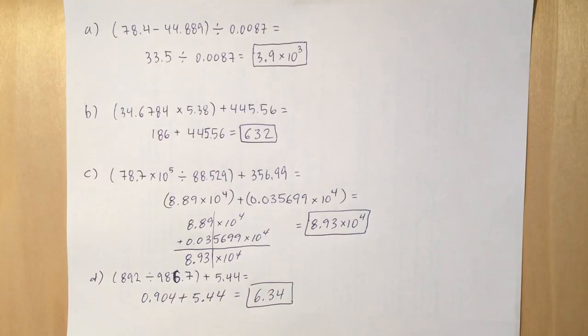And then lastly, same strategy. You do what's in the parentheses first: 892 divided by 986.7. That's going to give you a number to 3 sig figs, 0.904. You add that to 5.44, and you're going to cut that off at the second decimal because of the 5.44, giving you 6.34. Okay, let me know if you need any help with this one.